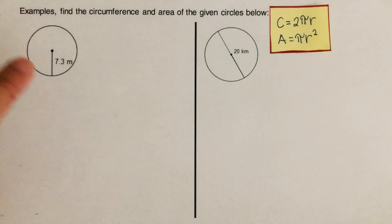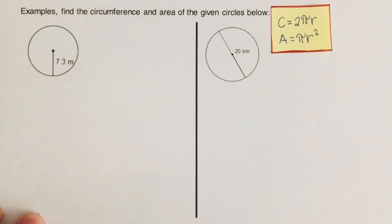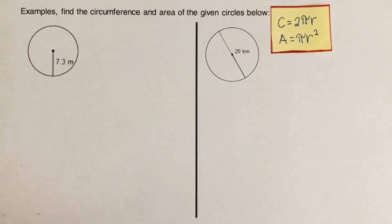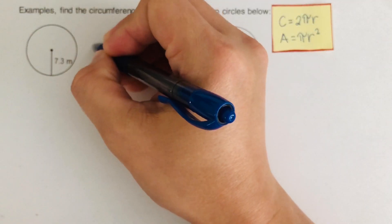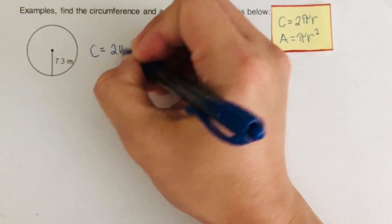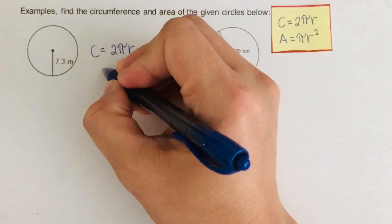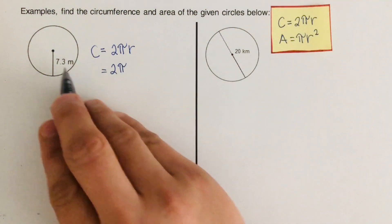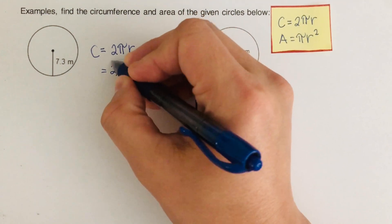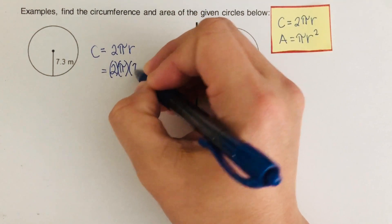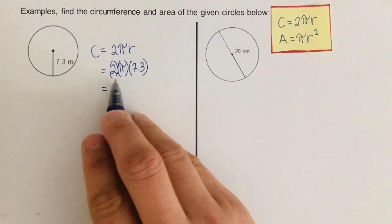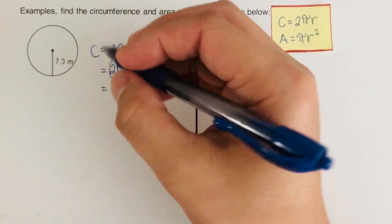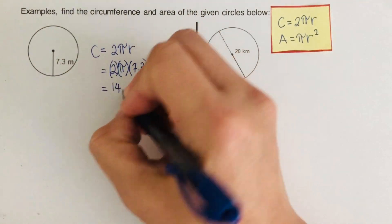We start with the first problem. The given value is the radius, and we're asked to find both the circumference and area. For circumference, the formula is C = 2πr. So we have 2 times pi — keeping pi as pi for now — times the radius, which is 7.3. Multiplying 2 times 7.3 gives us 14.6π.